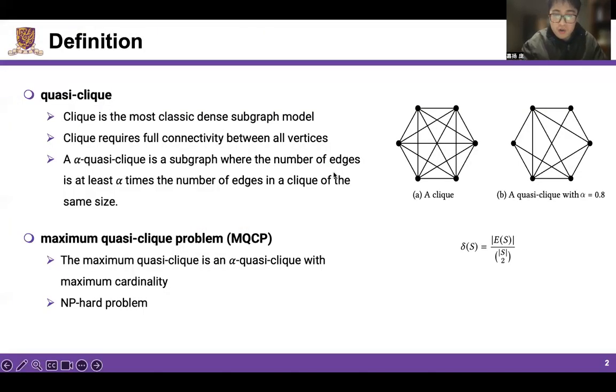So here's the problem we want to solve. Dense subgraphs have many applications like identifying spam link farms in webgraphs and analyzing social networks. The clique is the most classic dense subgraph model, which requires full connectivity between all vertices.